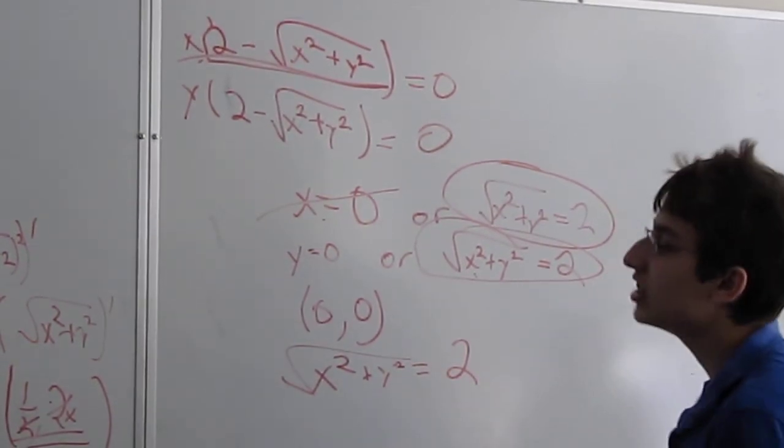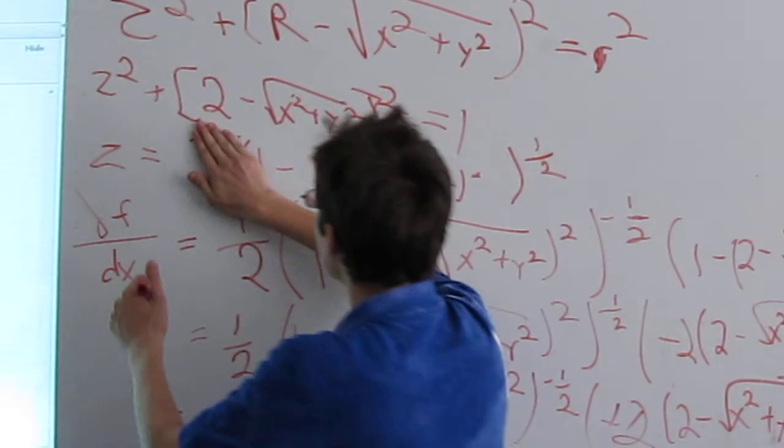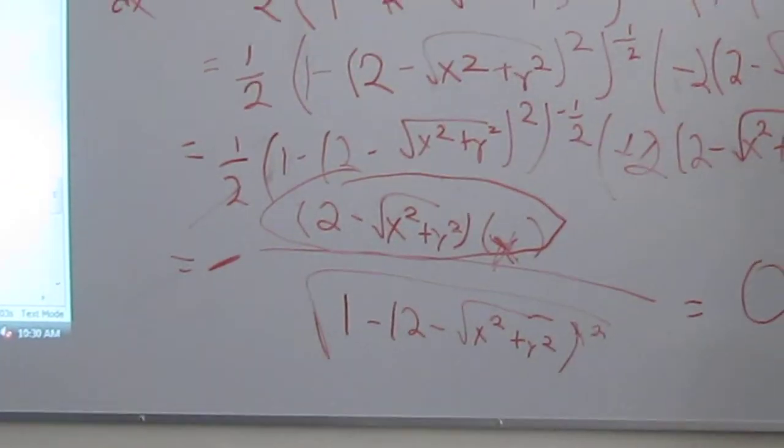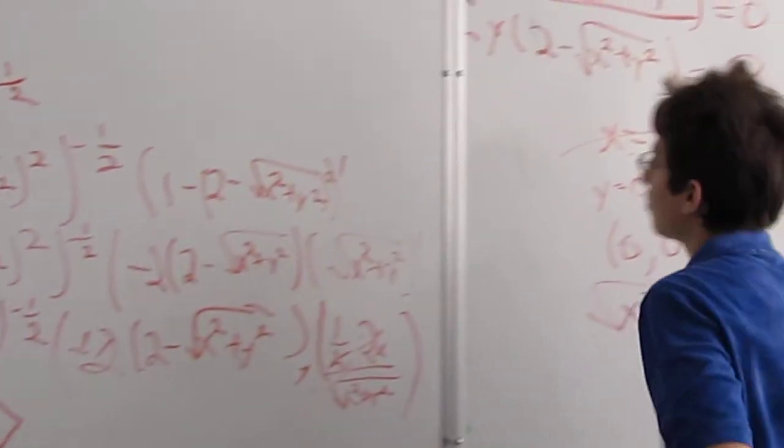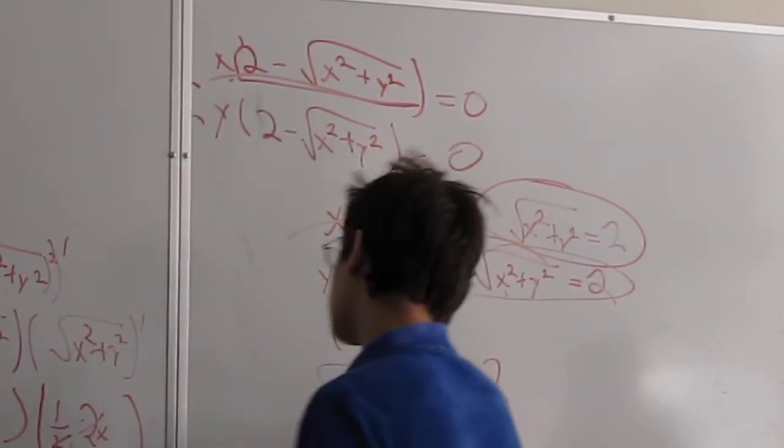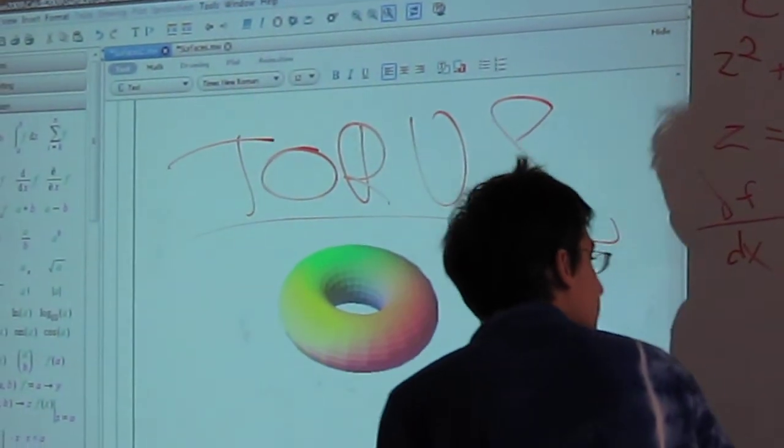So, and then similarly, even if we took the derivative, the partial derivatives with the negative guy, this would just have a giant negative in front, and we all know negative zero is zero, or we should all know that, because if not, we have problems. So, then the solutions will still remain the same. So, our solutions will be when x and y are zero, or when x squared plus y squared equals four.